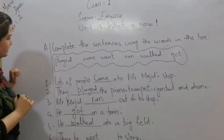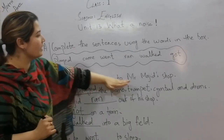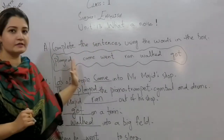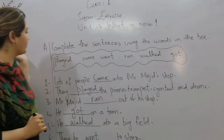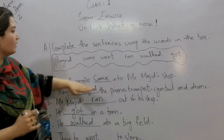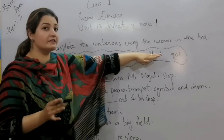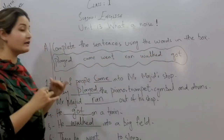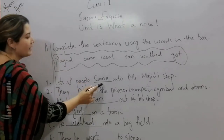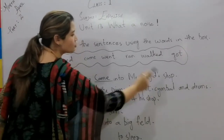Let's start solving the sentences. The first one is: 'Lots of people ___ into Mr. Majid's shop.' We go through the options — played? No. Went? No. Ran? Walked? Got? No. What did they do? They came into Mr. Majid's shop. So the answer is: Lots of people came into Mr. Majid's shop. There was a woman, a boy, and some men who came into Mr. Majid's shop.